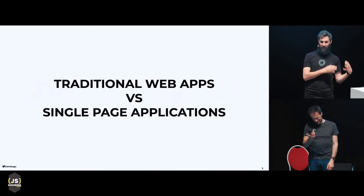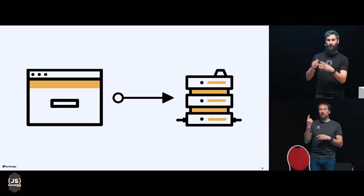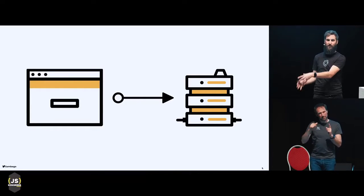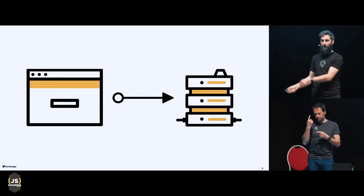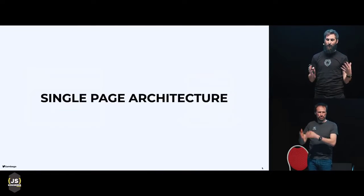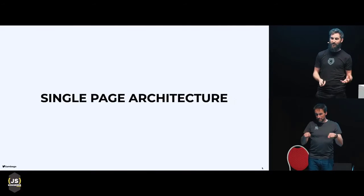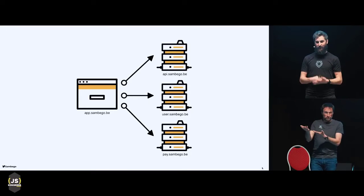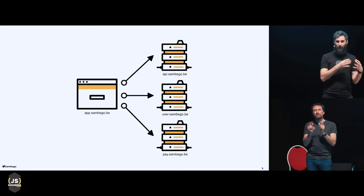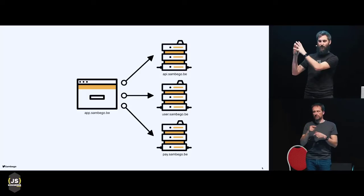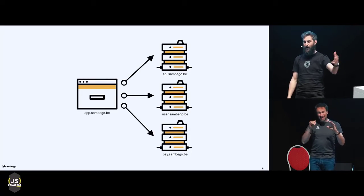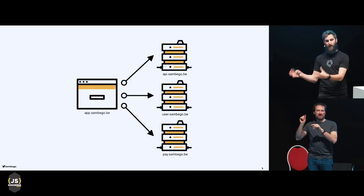So we've seen how a traditional web app usually handles authentication. What's the difference with a single-page application? The traditional architecture is usually one-to-one — you have your web app, and it's related to a server. When you have a single-page architecture, it can be something like this: you can have a bunch of microservices, or your app lives in one domain and your APIs live in different domains, like one for a general API, one for user data, one for payment data.